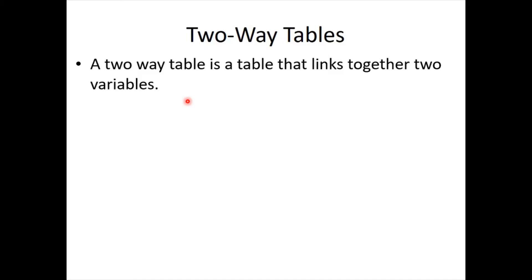We'd also record whether they're male, female, or other — whether they ascribe to a gender at all. So we'd have three rows for gender: male, female, and other. And then whichever sports we give as options — football, rugby, netball, basketball — giving us four columns and three rows. There's also a final column and row for totals. Basically, it's a way of linking two variables.